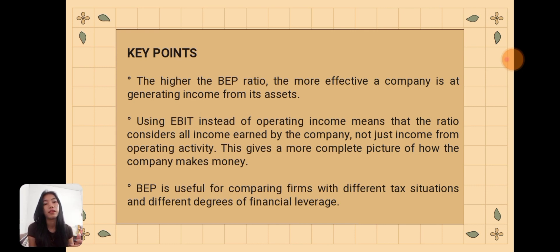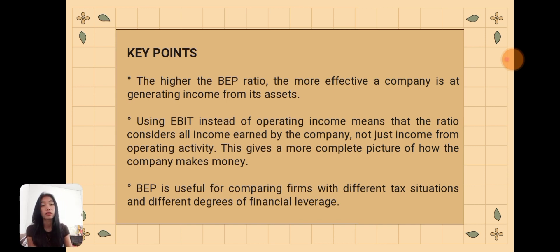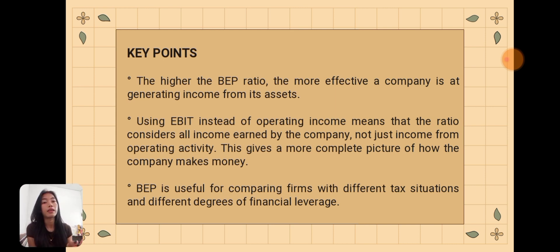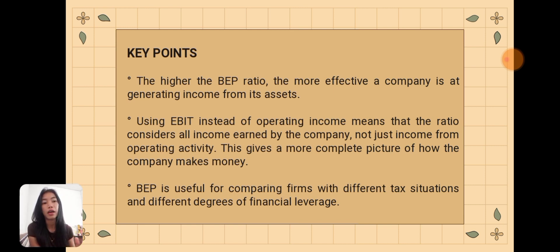There are key points to remember. First, the higher the BEP ratio, the more effective a company is at generating income from its assets. If the result is higher compared to the industry average, it suggests that the company is effective at generating income from its assets.